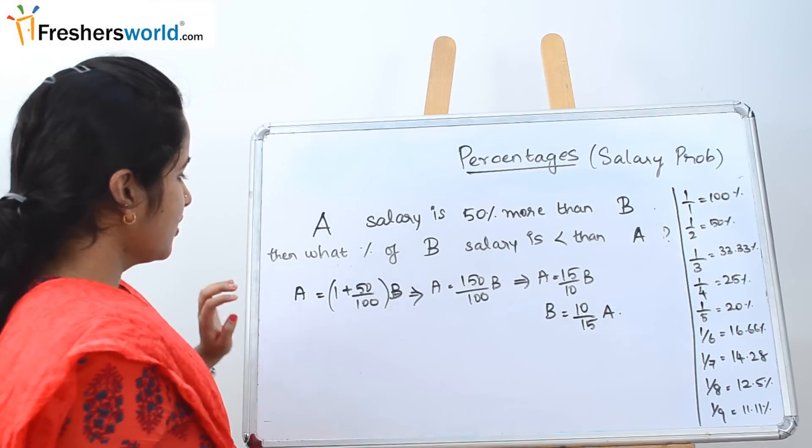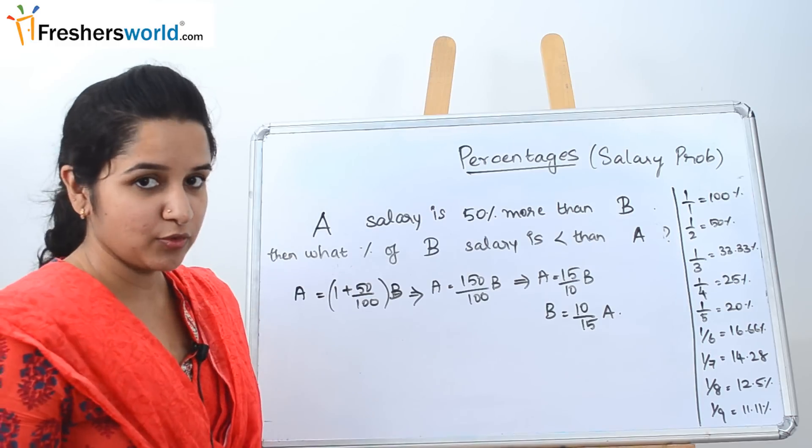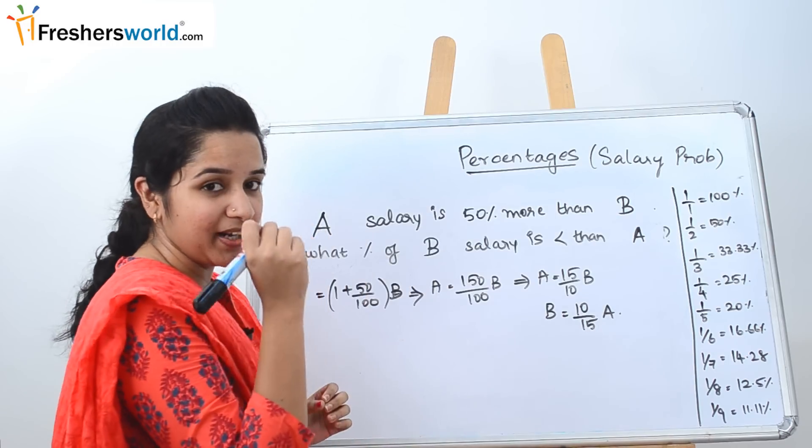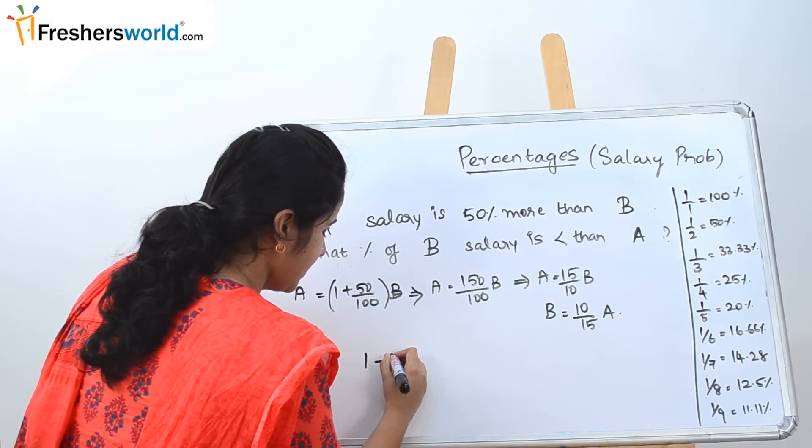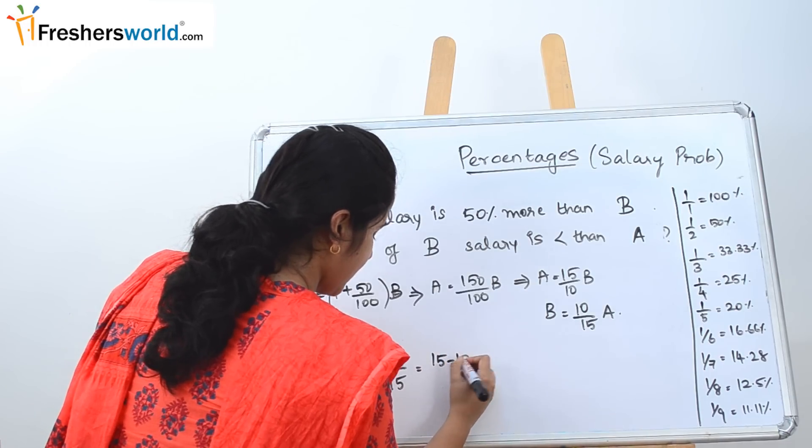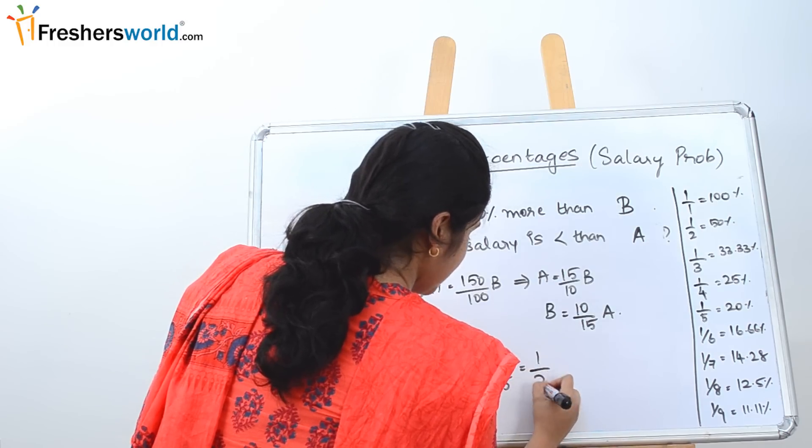What they have given in the question: what percentage of B's salary is less than A? That's what we have to find out now. So how to find this? B's salary was initially 1. We are going to subtract it from 1. So 1 minus 10 by 15, which is nothing but 15 minus 10 by 15, which equals 5 by 15, which can be written as 1 by 3.